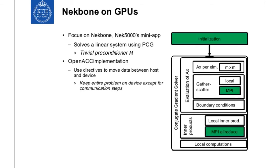The problem is that some steps require data on the host: the initialization, and the gather-scatter when using multiple GPUs. The gather-scatter has a local component between local elements, but with multi-GPU you also have to do gather-scatter between mesh partitions living on different devices. Here you have to move data back to the host, do the gather-scatter over MPI, and then copy it back to the device. Similarly, inner products with multi-device require reductions by moving data back and forth.